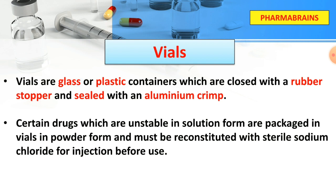Next is vials. Vials are glass and plastic containers which are closed by a rubber stopper and sealed by aluminum. Some drugs which are not stable in liquid form are packed in powder form, and when we use them, we reconstitute them with Sterile Sodium Chloride for Injection before administration.